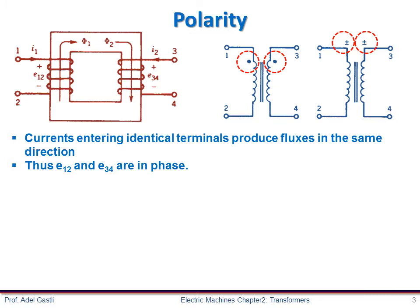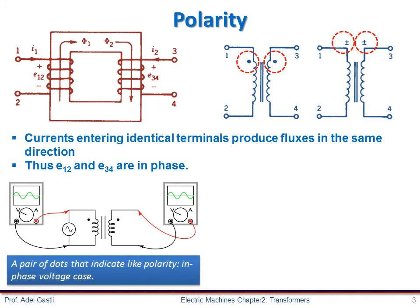Since this is a practical concern, transformer manufacturers have come up with polarity marking standards to denote phase relationships. It is called the dot convention, and is nothing more than a dot placed next to each corresponding leg of the transformer winding. The similar placement of these dots next to the top ends of the primary and secondary windings tells us that whatever instantaneous voltage polarity is seen across the primary winding will be the same as that across the secondary windings — in other words, the phase shift from primary to secondary will be 0 degrees.